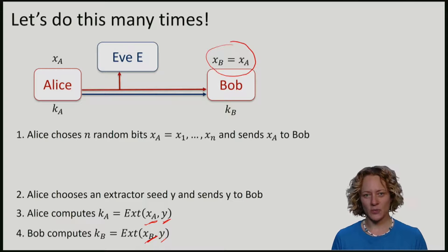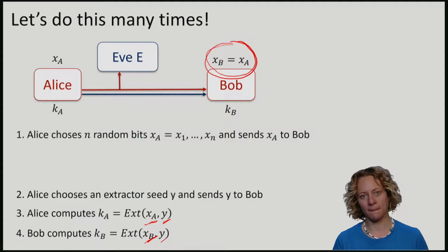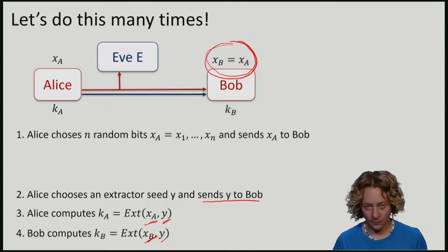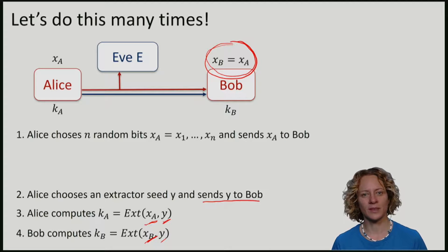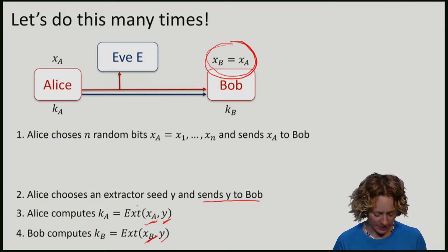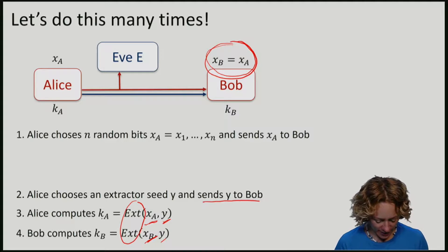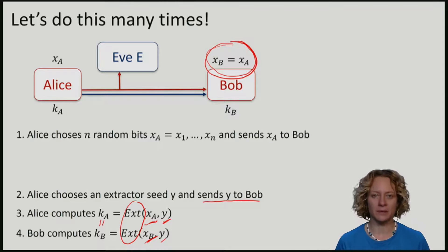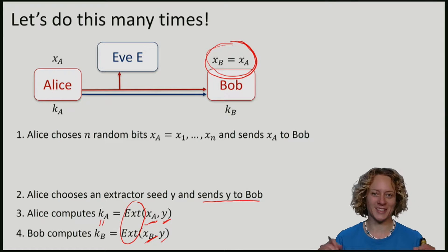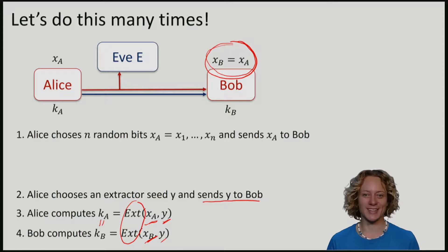Note that Bob has precisely the same string as Alice, and he also knows the seed y that Alice has used. So they apply the same function ext to the same argument x and y, and this gives us the same outcome. So we certainly have that ka is always exactly equal to kb. That's great. Our protocol is perfectly correct.